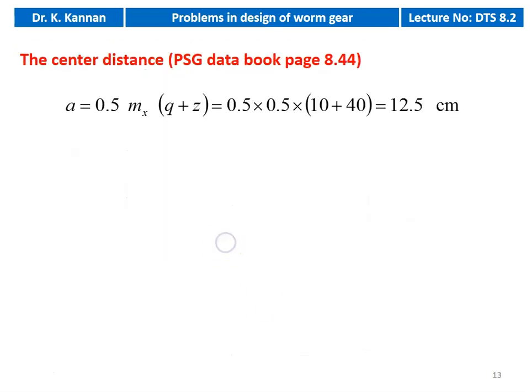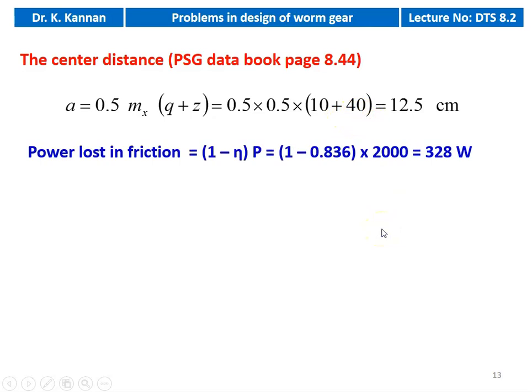Then we calculate the center distance: A = 0.5 × mx × (Q + z) = 0.5 × 0.5 × (10 + 40) = 12.5 centimeters. All values were given, so it was straightforward. Then the power loss in friction = (1 − η) × power = (1 − 0.836) × 2000 = 328 Watt. This is the power loss in friction.